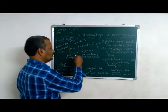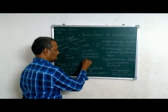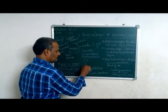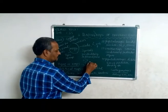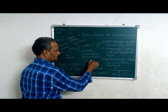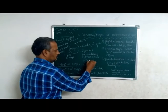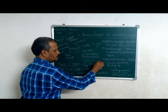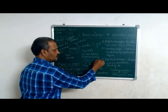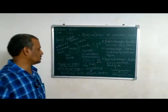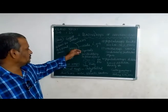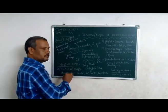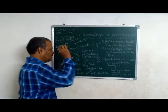Symbols are used for identifying different places. For example, one symbol indicates a tree. Another symbol indicates ports. Another symbol indicates post and telegraphic offices. That is the difference in map symbols.